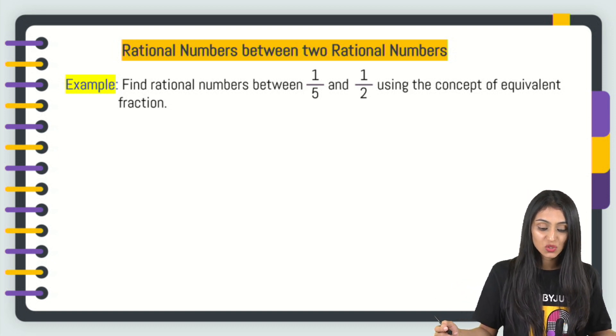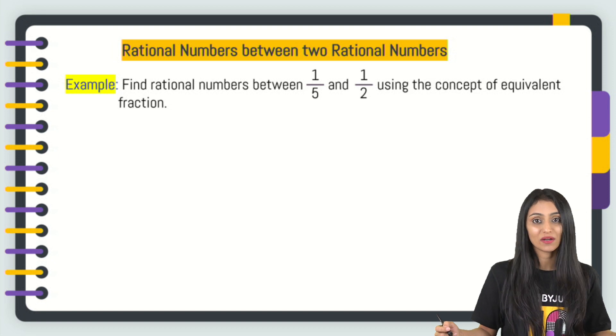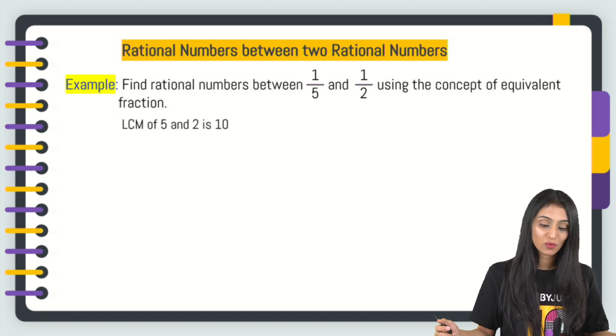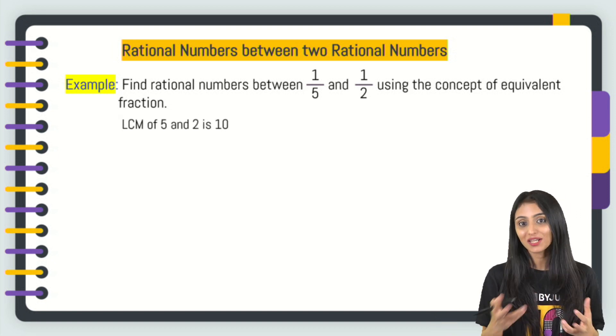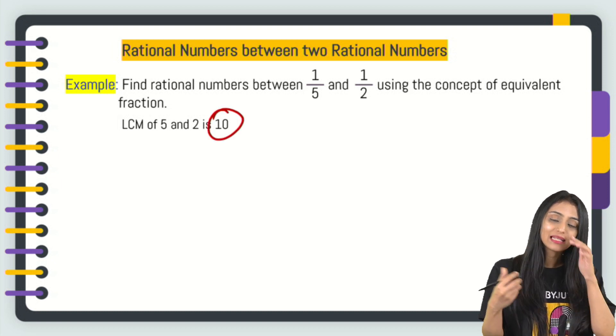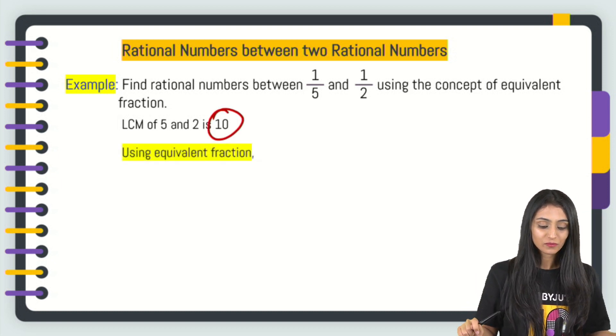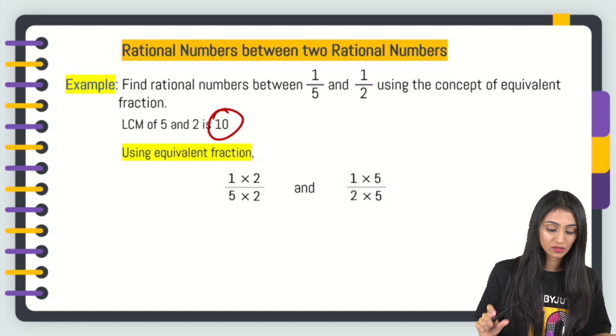Find a rational number between 1 by 5 and 1 by 2 using the concept of equivalent fraction. I have 1 by 5 and 1 by 2. What we just learned, first we make the denominator same. Let's take LCM, that's going to be 10.